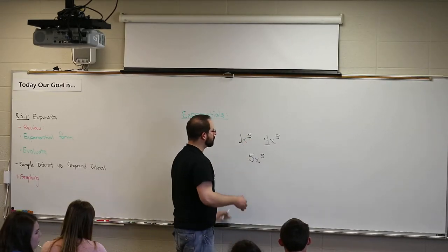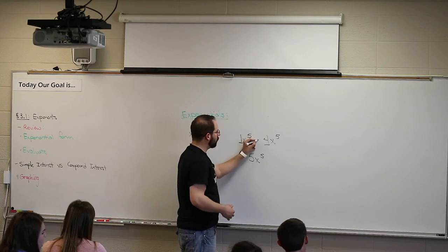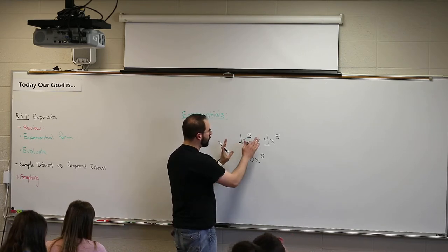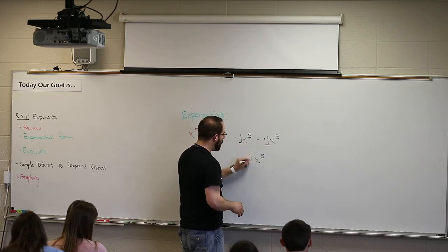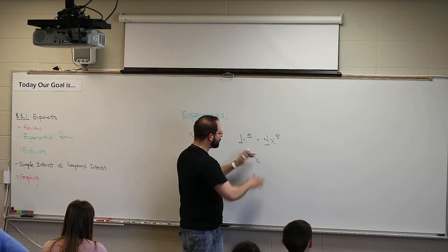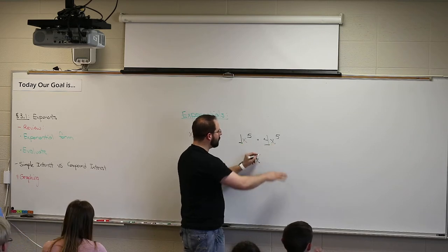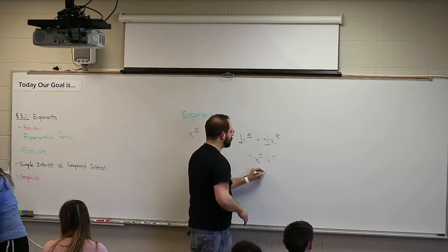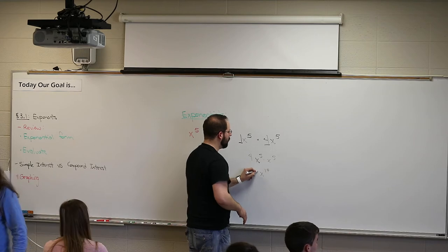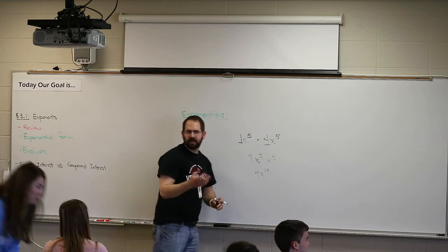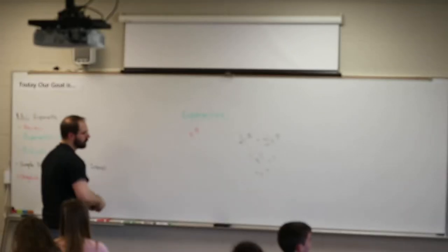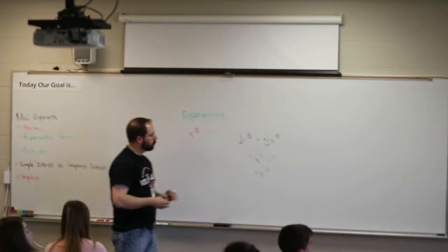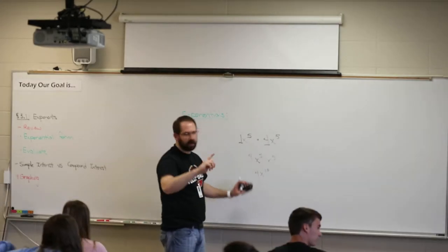When you multiply, that's completely different. When you multiply, now you're multiplying the numbers out front, which makes 4. And then the x's, you tack them in the back, and that makes 10 x's total. That's the difference between multiplying and adding and subtracting. Is there any questions with the difference between adding and multiplying?